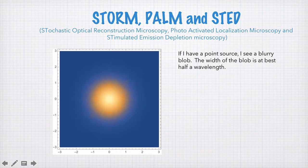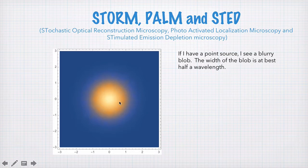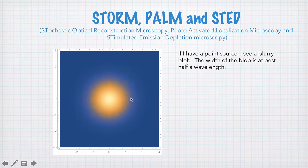They're different techniques, but they all share a common idea. Imagine we have some point source — an ideal point source, say a single fluorescing molecule — and we image this with a microscope. The smallest you could focus the image down to is half a wavelength of whatever light is being emitted, and that's Abbe's diffraction limit. So your ideal point source, which can be arbitrarily small, will get imaged to something which is at best half a wavelength wide.